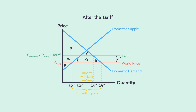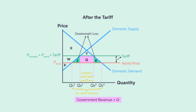Tariffs cause the economy to devote more resources to a good that could be produced at a lower cost in other countries. This causes deadweight loss represented by the area Z. Tariffs also cause consumers to purchase a smaller quantity, creating a separate deadweight loss represented by the area R. Tariffs generate revenue to the government represented by the area Q. The losses from tariffs exceed the gains, so the tariff reduces total surplus by the area Z plus R.